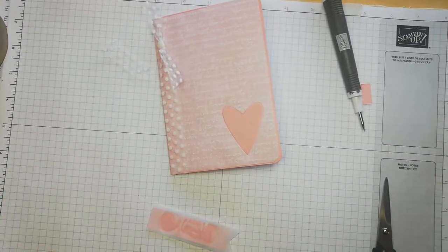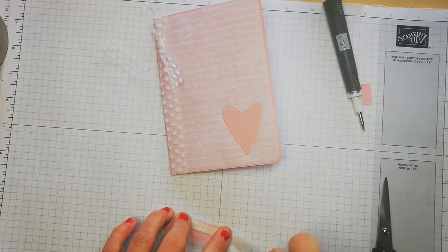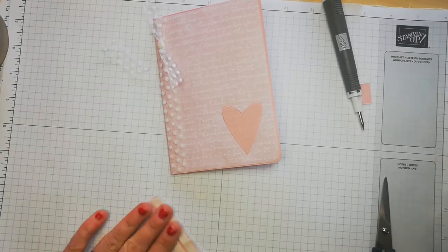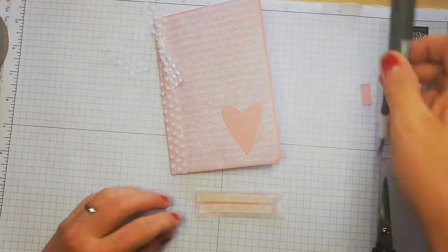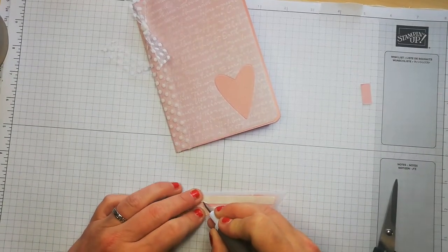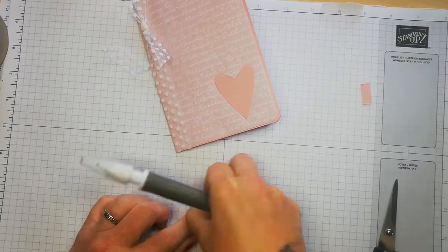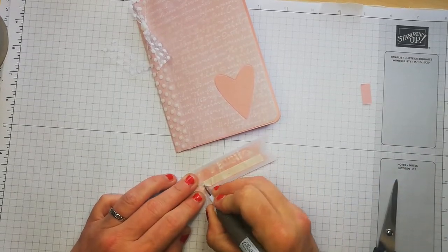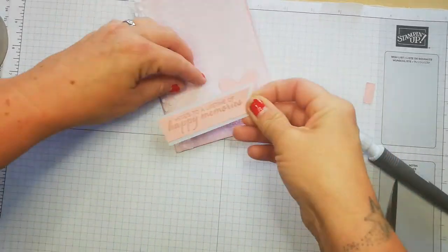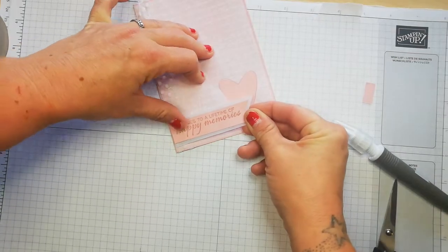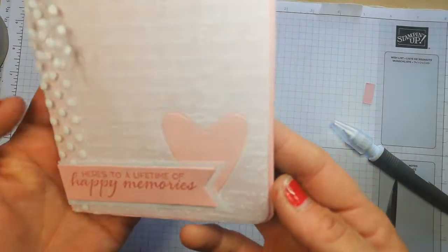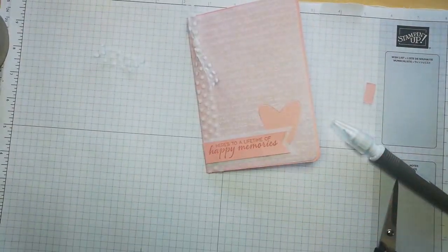Let's get that stuck down. I am using tearing tape again just to give it some more security on the card because it's vellum going on to vellum. That is going to go on there. I think that's adorable. Let me get some bling.